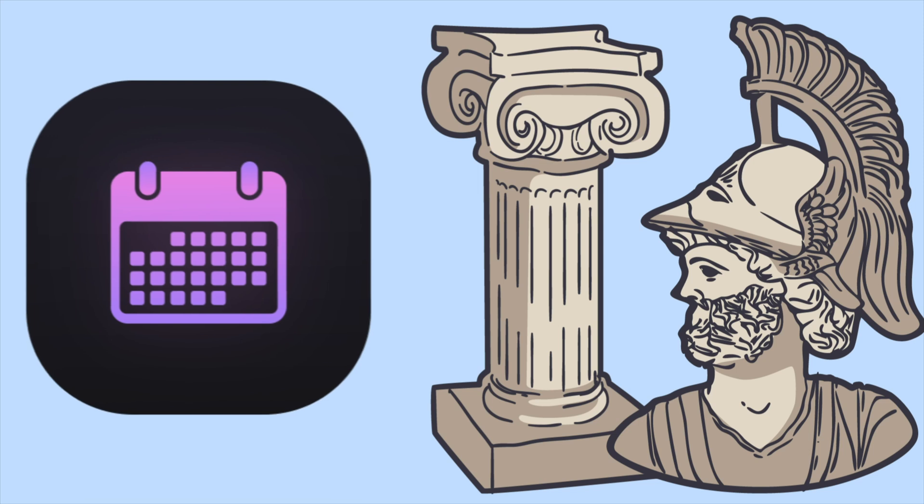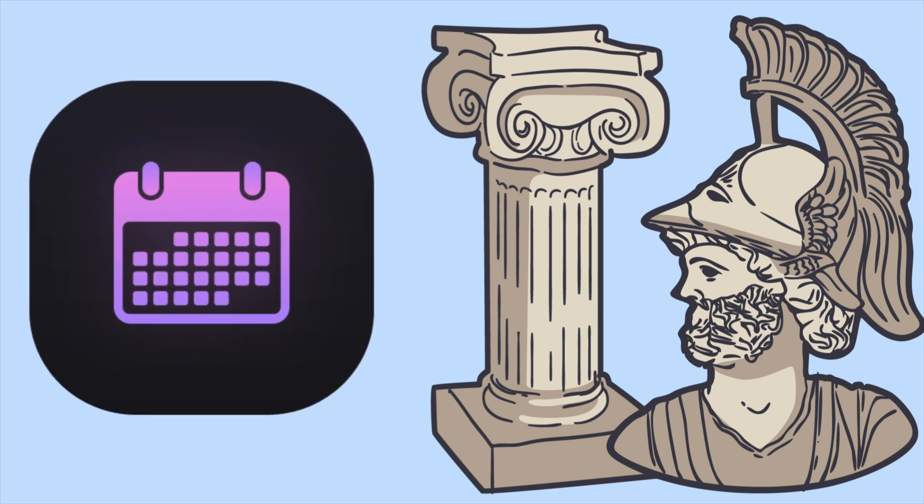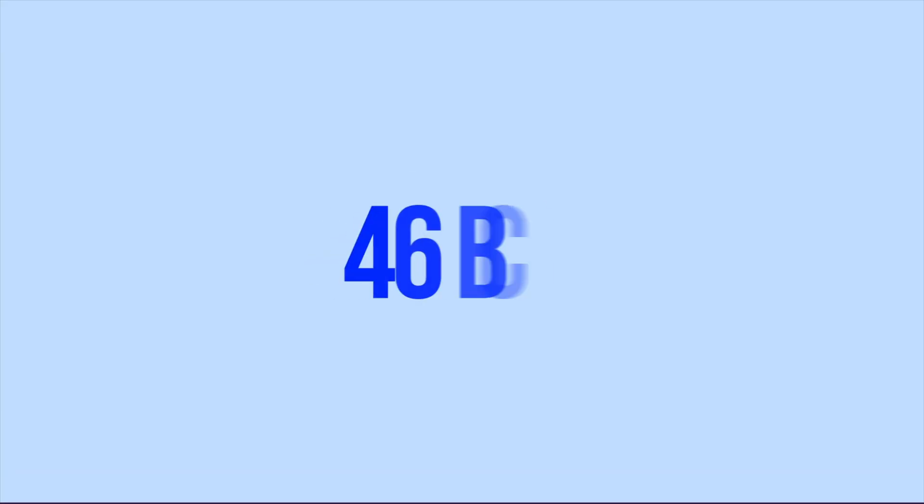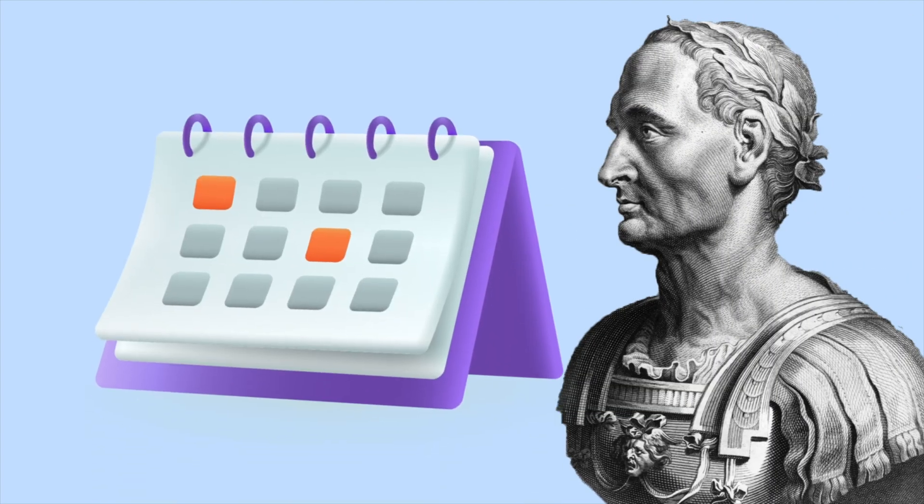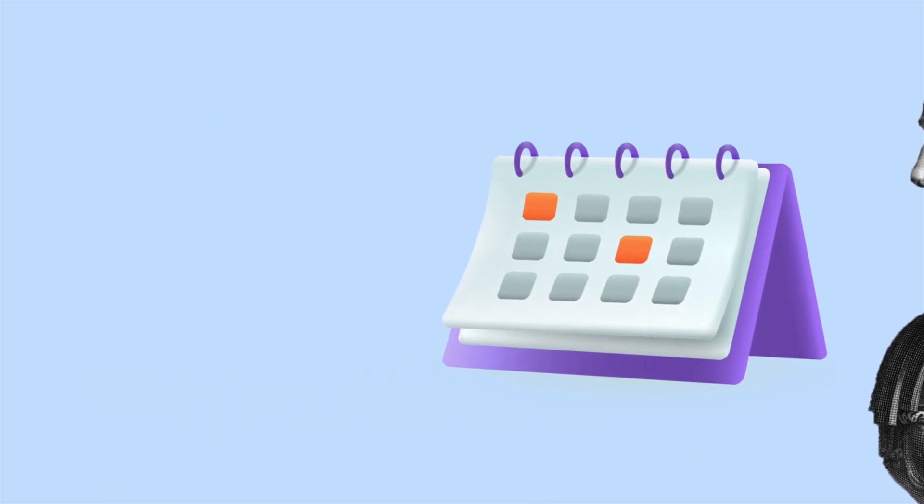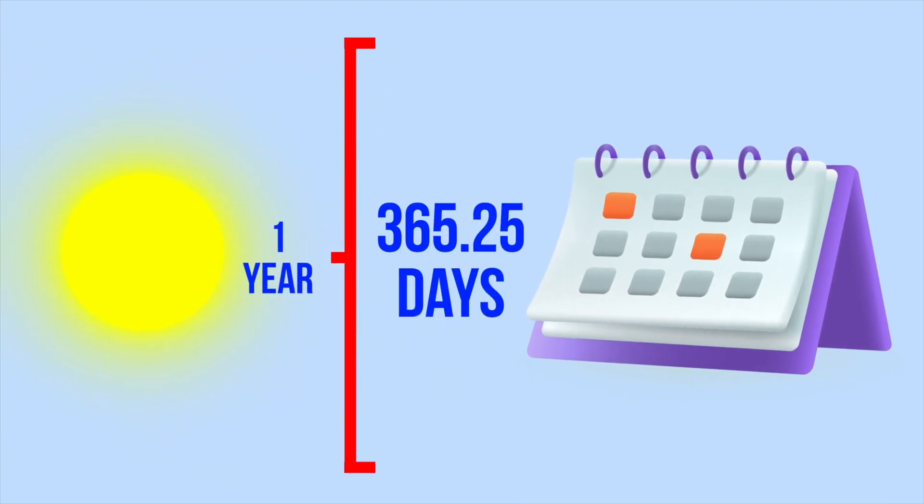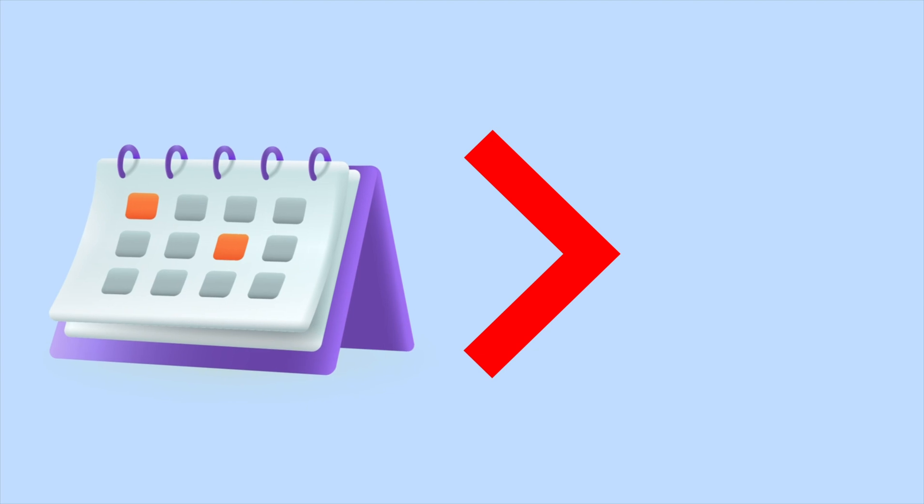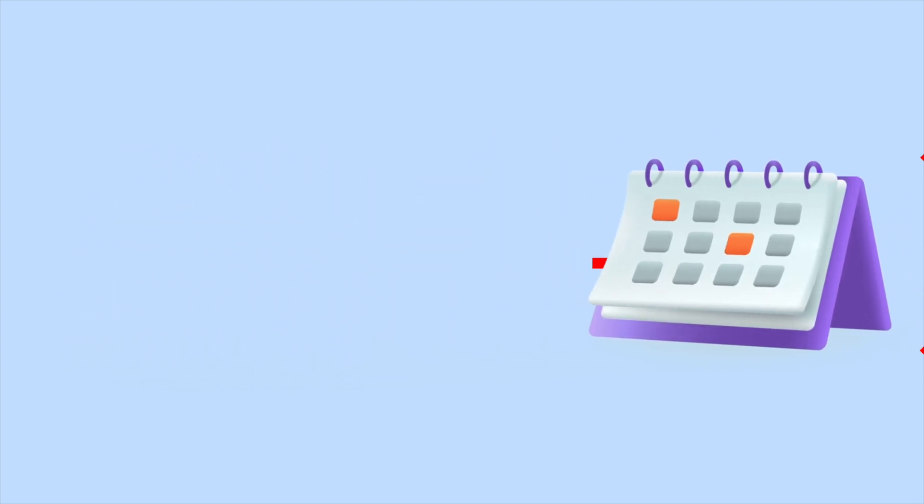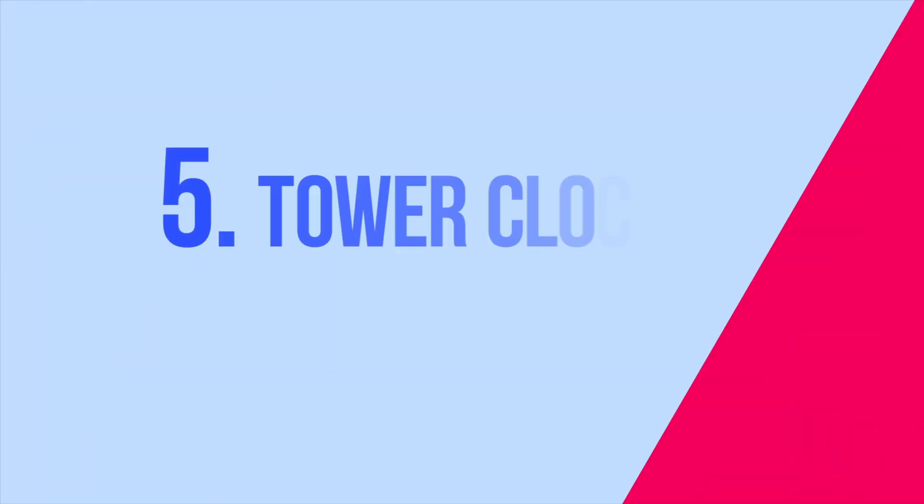Previously, calendars were linked to natural phenomena such as lunar and solar cycles. In 46 BC, Julius Caesar decided to adopt the Julian calendar, which is regarded as the first attempt to standardize and stabilize the solar year at 365.25 days. This calendar was more accurate than its predecessors and became the foundation for the Gregorian calendar we use today.